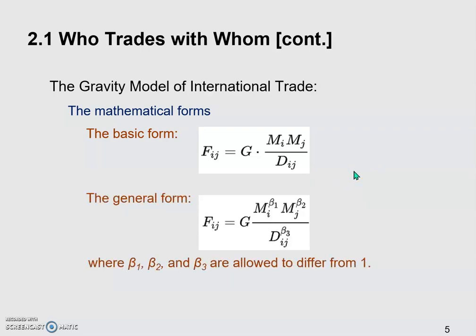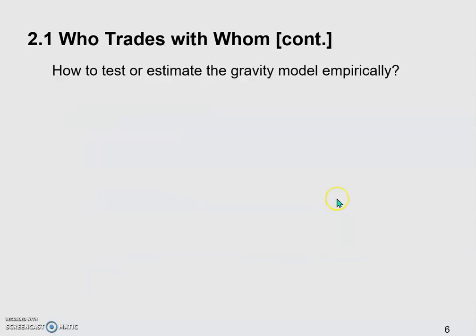We also have a more general form of the gravity model, where we introduce exponents — beta 1, beta 2, and beta 3 — for these variables. These constants are allowed to differ from one, meaning GDP-i and GDP-j can be raised to a power rather than simply multiplied. The same applies to the distance term.